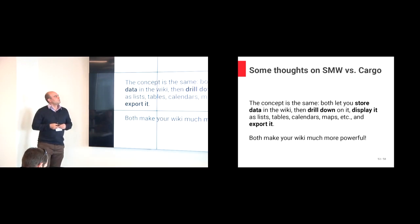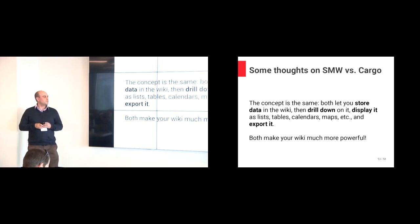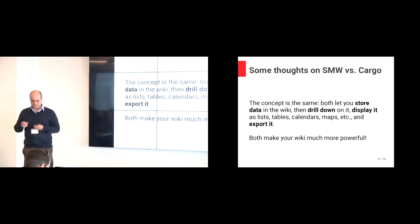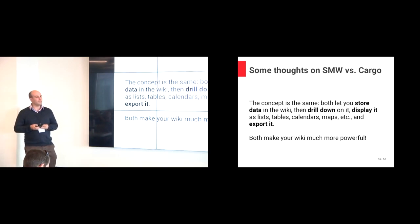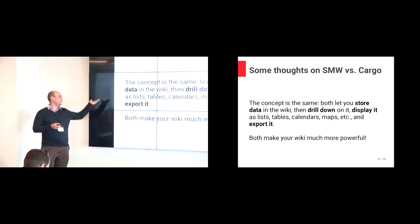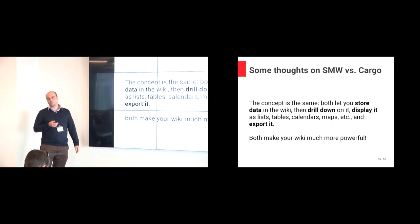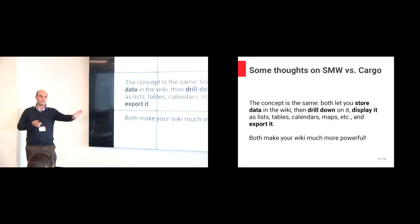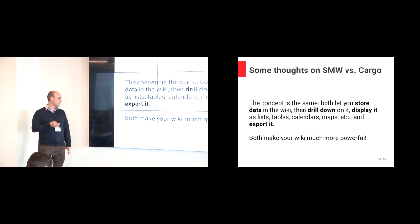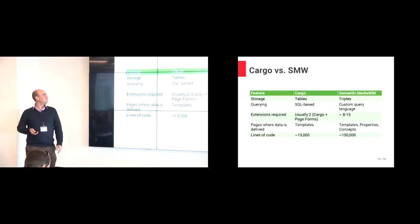I talked before about Cargo and its relationship to Semantic MediaWiki — people ask about it a lot. The concept is pretty much exactly the same. They both let you store data in the wiki, specifically in template calls within pages. Then you can drill down on it and display it in lists, tables, calendars, maps, etc. You can export it — both provide an API to get data in CSV or JSON form. They both make your wiki a lot more powerful.